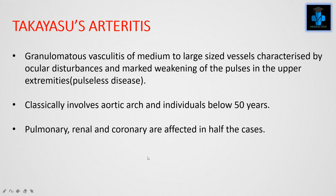Next is Takayasu's arteritis, a granulomatous vasculitis of medium to large sized vessels characterized by ocular disturbances and marked weakening of the pulses in the upper extremities. Therefore, Takayasu's arteritis is also known as pulseless disease. It classically involves the aortic arch in individuals below 50 years of age. Pulmonary, renal, and coronary vessels are affected in half the cases.